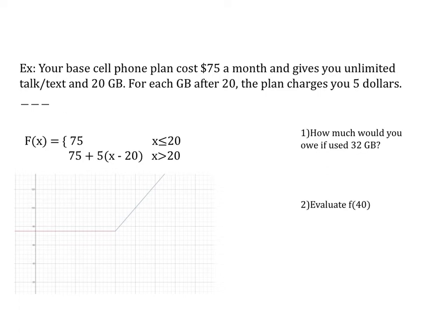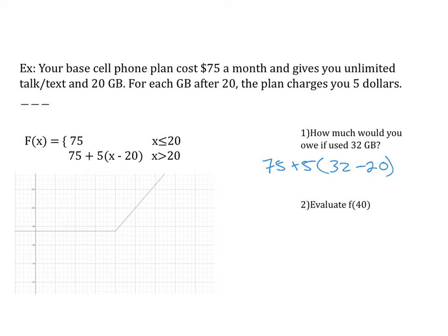We have two questions: how much would you owe if you use 32 gigabytes, and how much if you use 40? For 32 gigabytes, I check my index. Is 32 less than or equal to 20? No, it's not. But 32 is greater than 20, so I plug it into the second function: 75 plus 5 times (32 minus 20), which gives us $135.